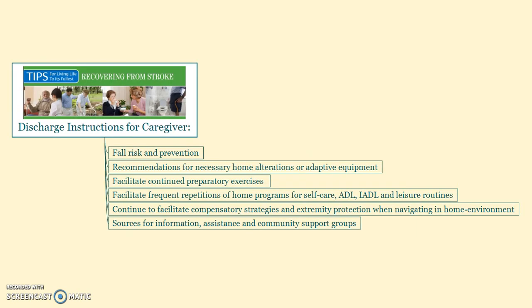Discharge instructions for the caregiver should include fall risk and prevention handouts and training, recommendations for necessary home alterations or adaptive equipment, facilitating continued preparatory exercises, facilitating frequent repetitions of home programs for self-care, ADL, IADL, and leisure routines, continuing to facilitate compensatory strategies and extremity protection when navigating the home environment, and providing sources for information, assistance, and community support groups.